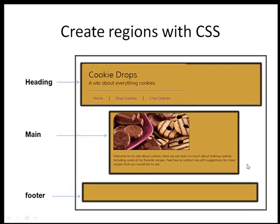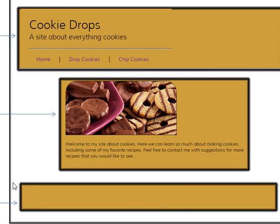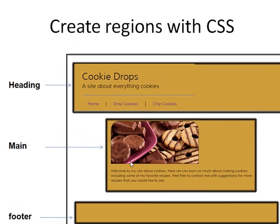So where we're going now — that's enough with the review — is we're going to start thinking about our page as having regions. Here's an example of the way we're going to mark up our page. We have a region at the top of the page we're going to call the heading, a section in the middle called main, and a section at the bottom called the footer.